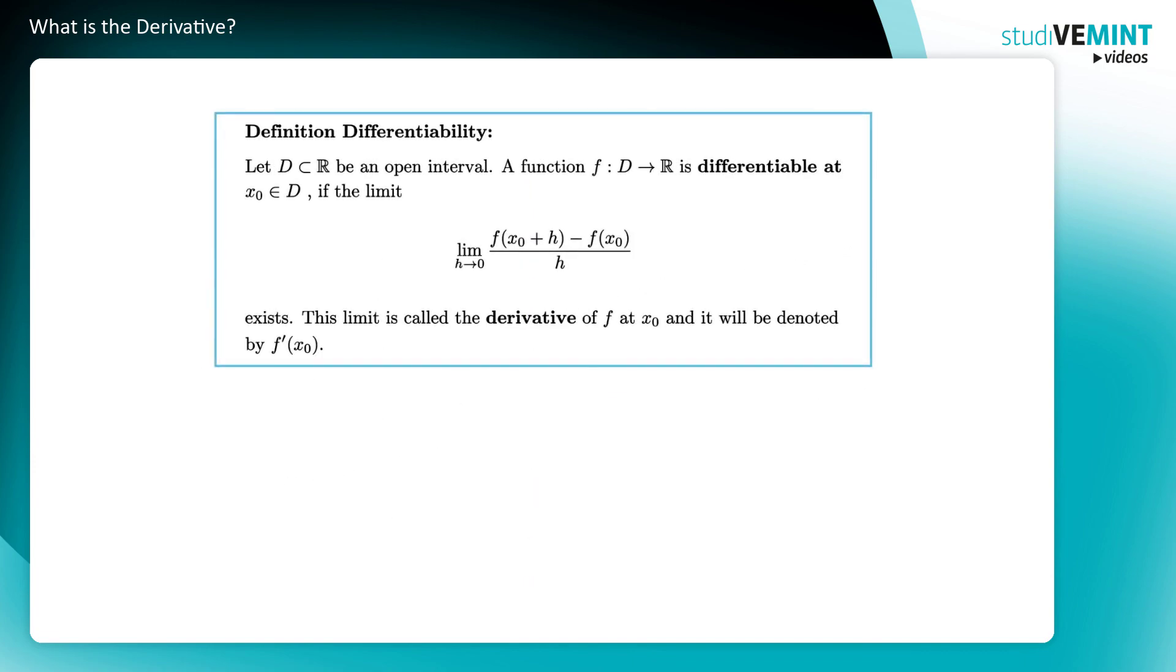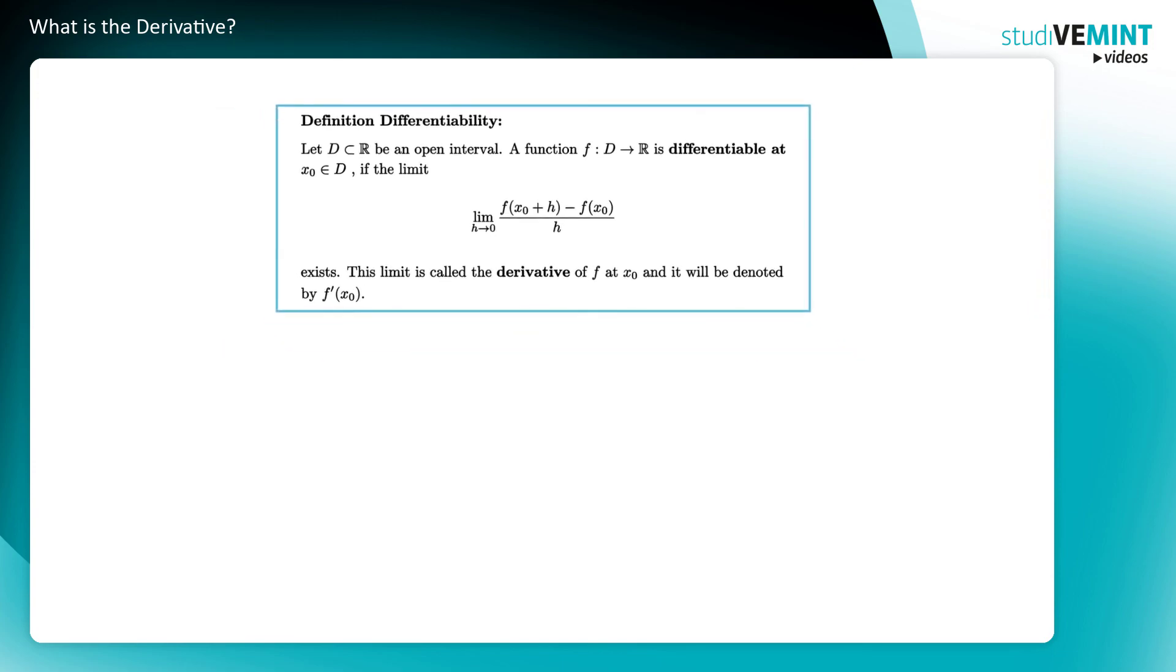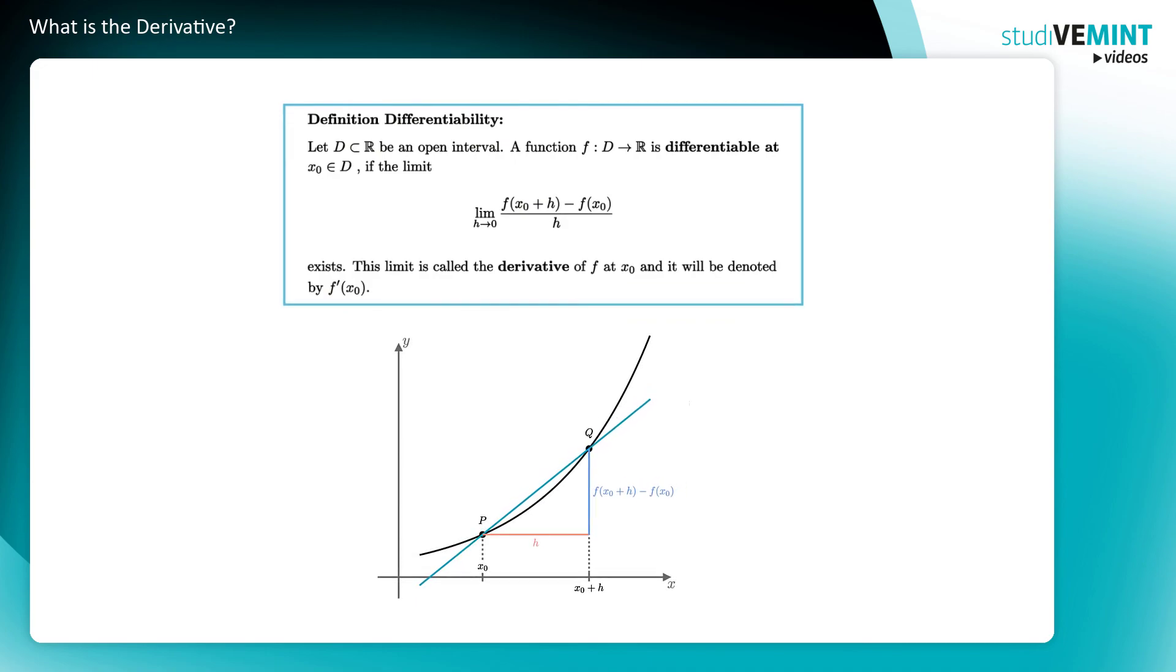In this video, you've learned about the definition of differentiability of a function at a point x₀ and interpreted the limit of the difference quotient at the point x₀ geometrically as the slope of the tangent line at x₀. This limit is called the derivative of f at x₀ and it is denoted by f'(x₀).